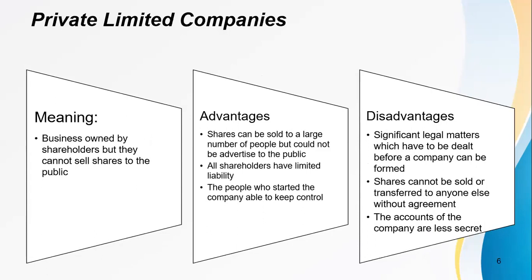Private limited company means a business owned by shareholders, but they cannot sell shares to the public. The advantages are: shares can be sold to a large number of people but cannot be advertised to the public, all shareholders have limited liability, and the people who started the company are able to keep control. The disadvantages are: significant legal matters must be dealt with before a company can be formed, shares cannot be sold or transferred without agreement, and the accounts of the company are less secret.